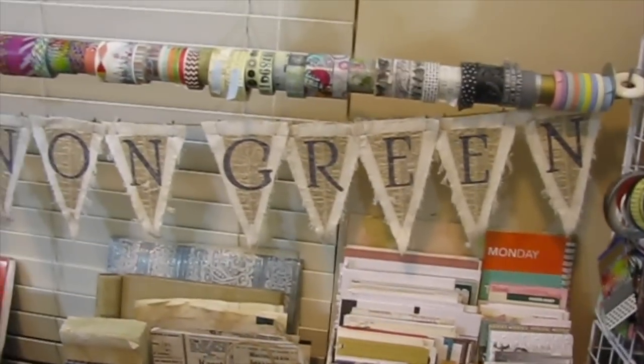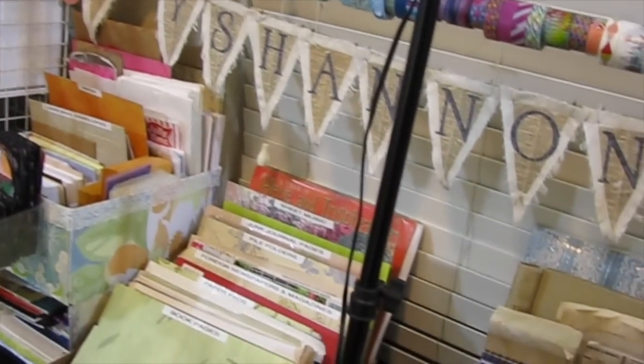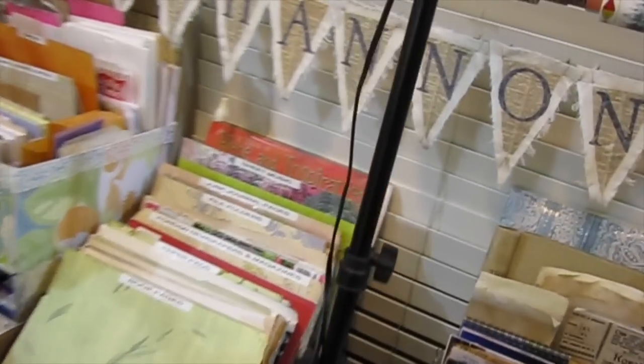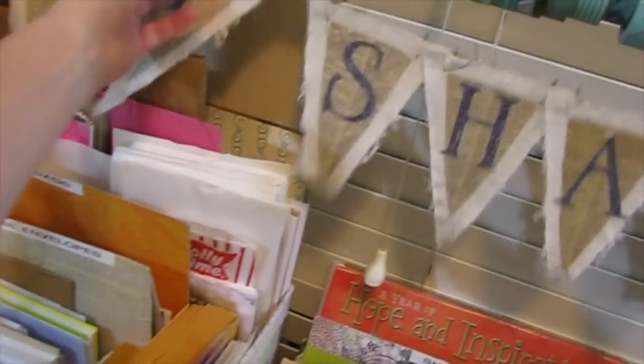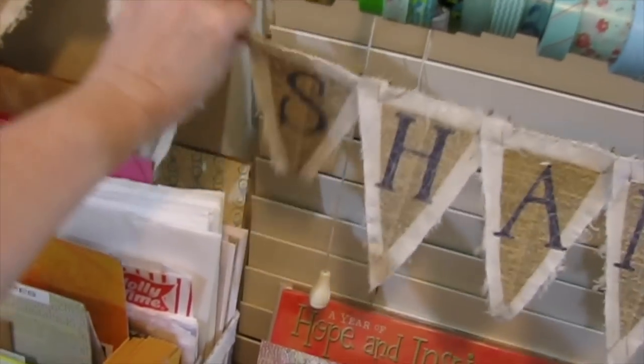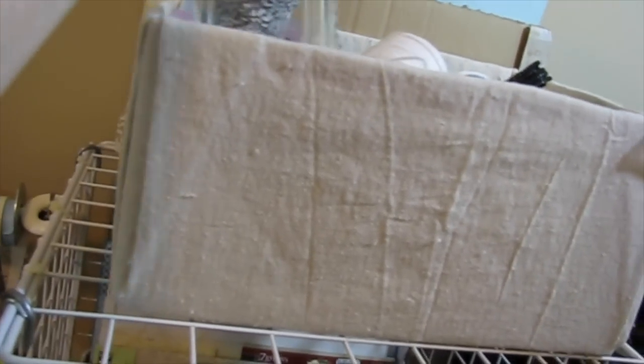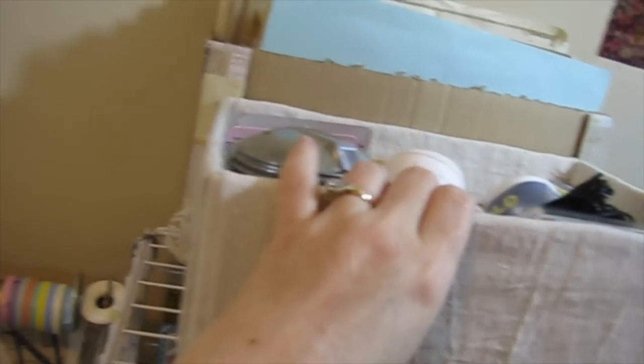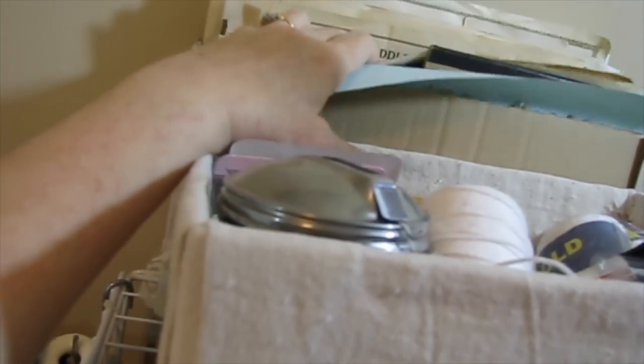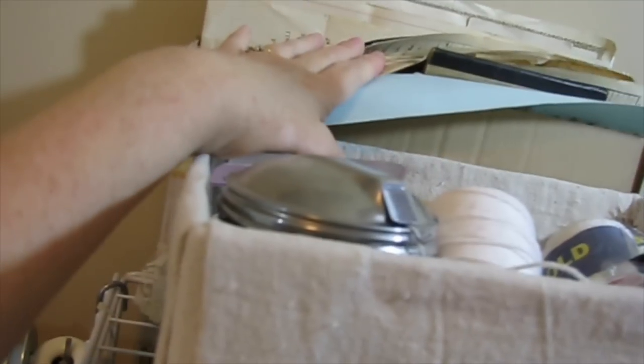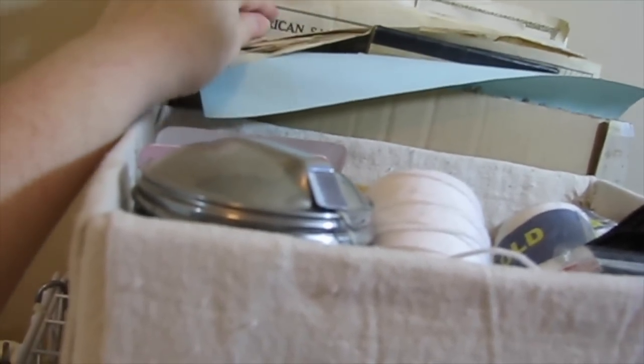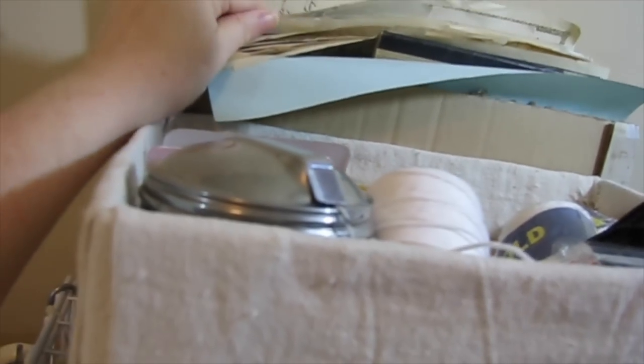Washi tapes are right there. And that banner is my craft booth banner that I just stuck there simply because I could. And over here, twine and string and bankers twine and stuff is in there. And back there, this is really, really old ephemera vintage papers that I just kind of used. They're kind of special. I like them.